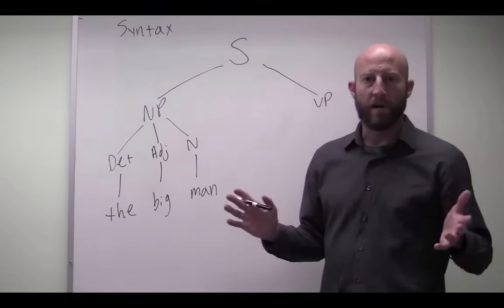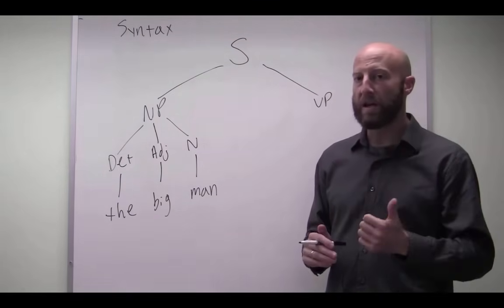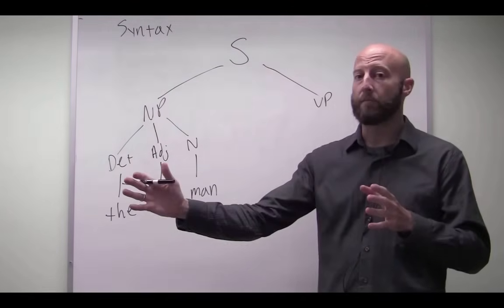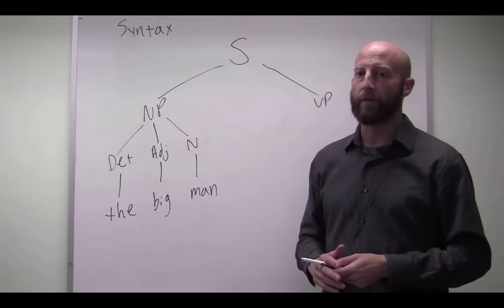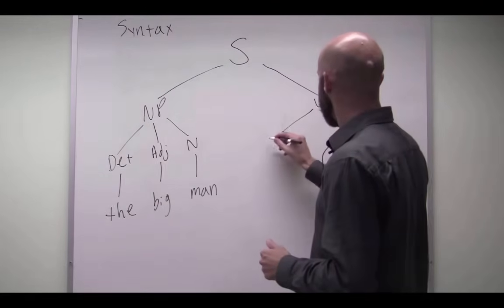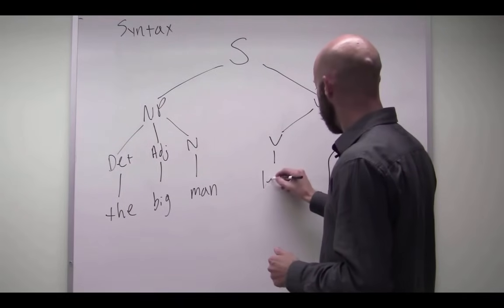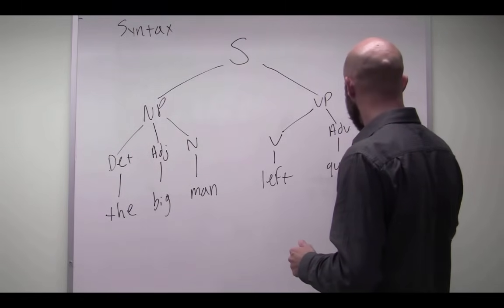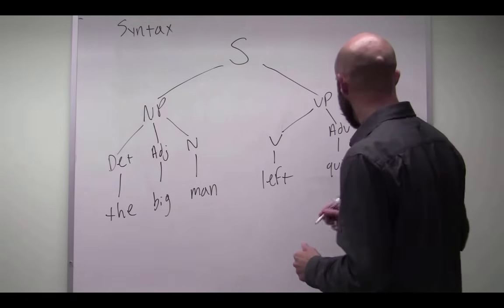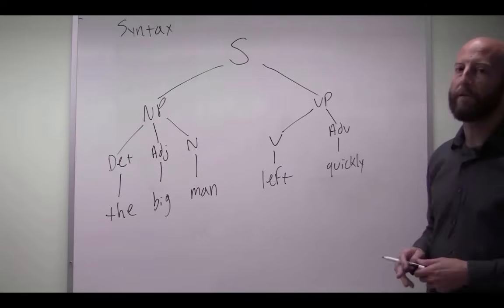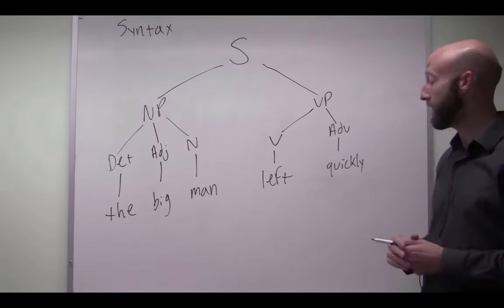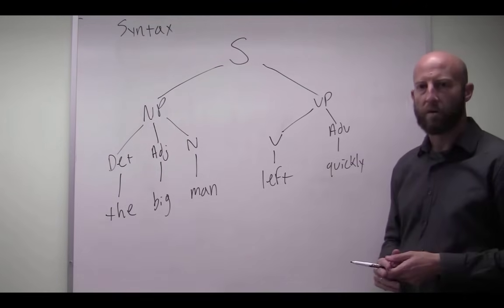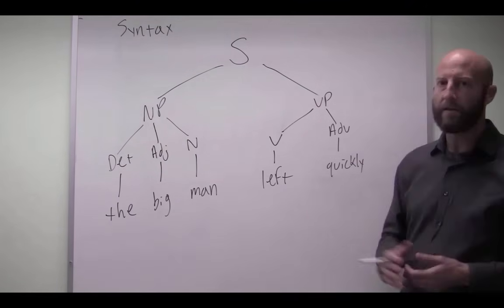Then we have the verb phrase. So once you reach the verb in English, you know automatically, right off the bat, that that verb and everything after it is going to be part of the verb phrase, just as a helpful tip. So we have the verb left. And then once again, we have this adverb quickly. How do you know you're dealing with an adverb? Well, most of the time if it ends in ly, you can be pretty sure it is an adverb. As it is in this case, it's saying something about the quality of the verb. How quickly did he leave or how did he leave? Quickly.